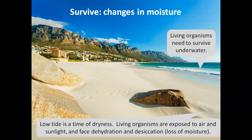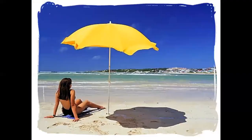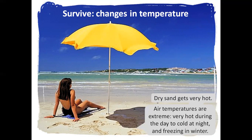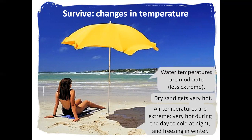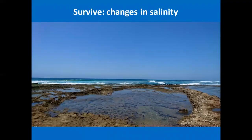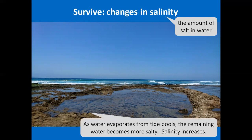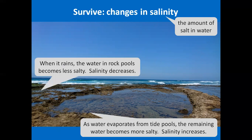Living organisms need to survive changes in temperature. Dry sand gets very hot. Air temperatures are extreme — very hot during the day, cold at night, and freezing in winter. Water temperatures are moderate and less extreme. Living organisms also need to survive changes in salinity, meaning the amount of salt in water. As water evaporates from tide pools, the remaining water becomes more salty and salinity increases. When it rains, the water in rock pools becomes less salty and salinity decreases.